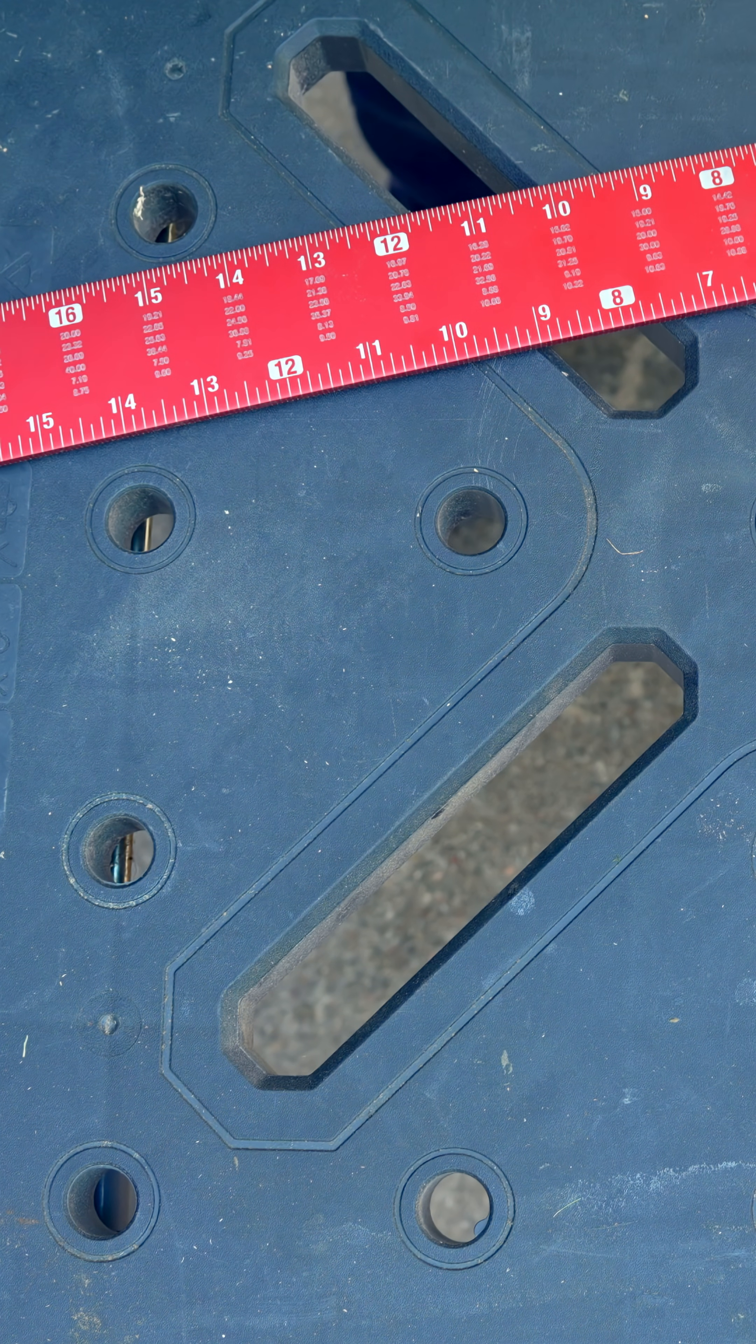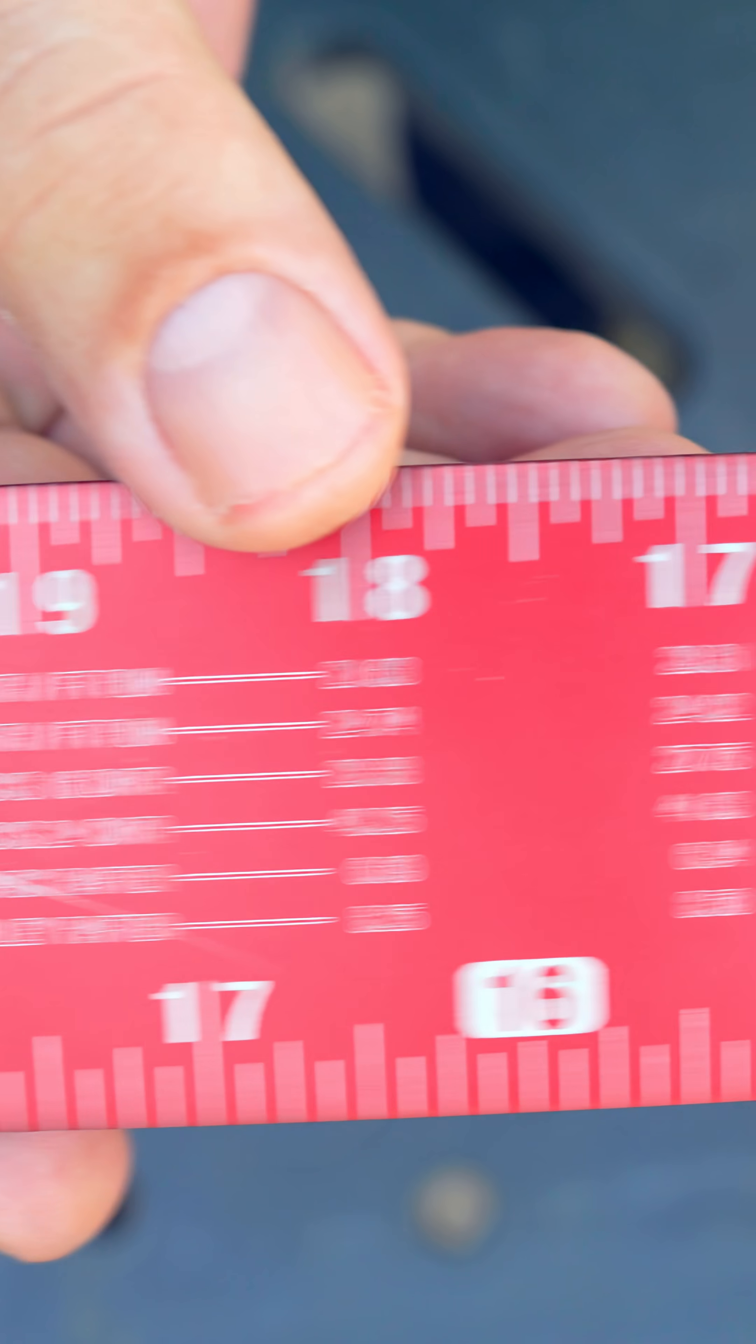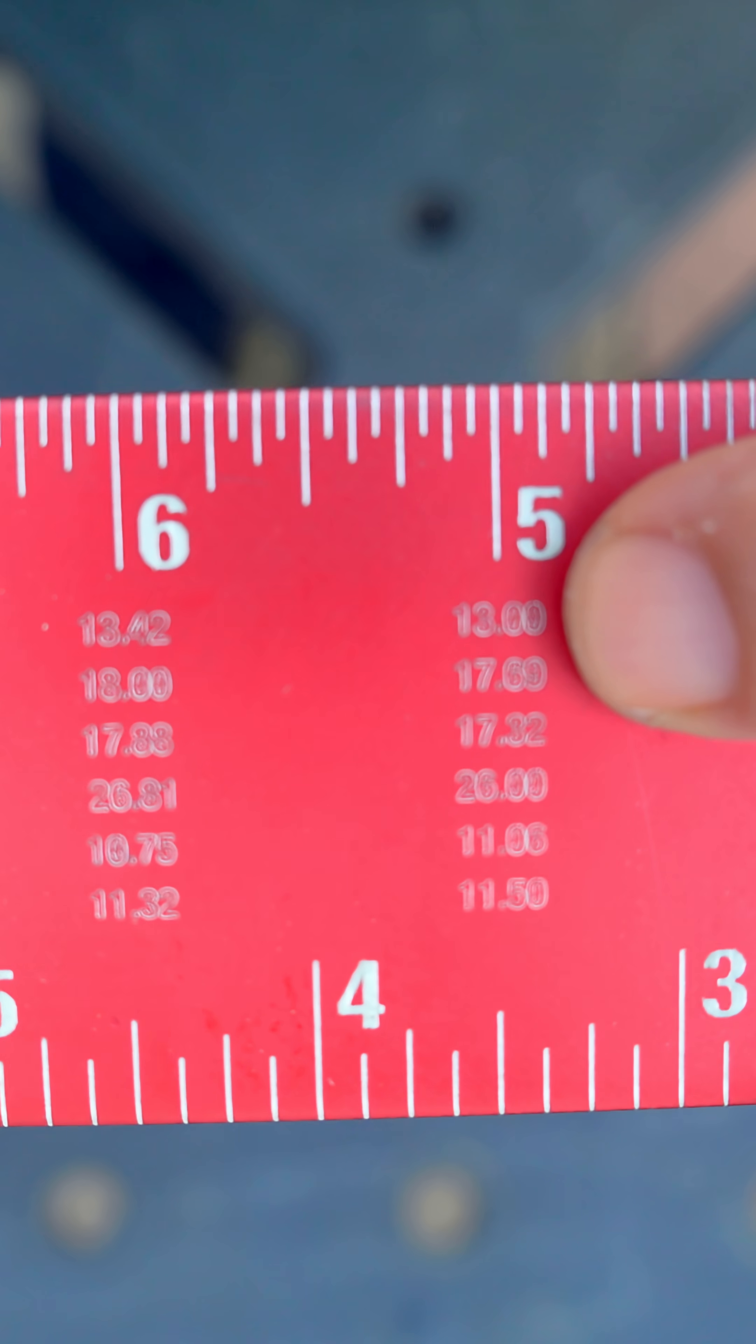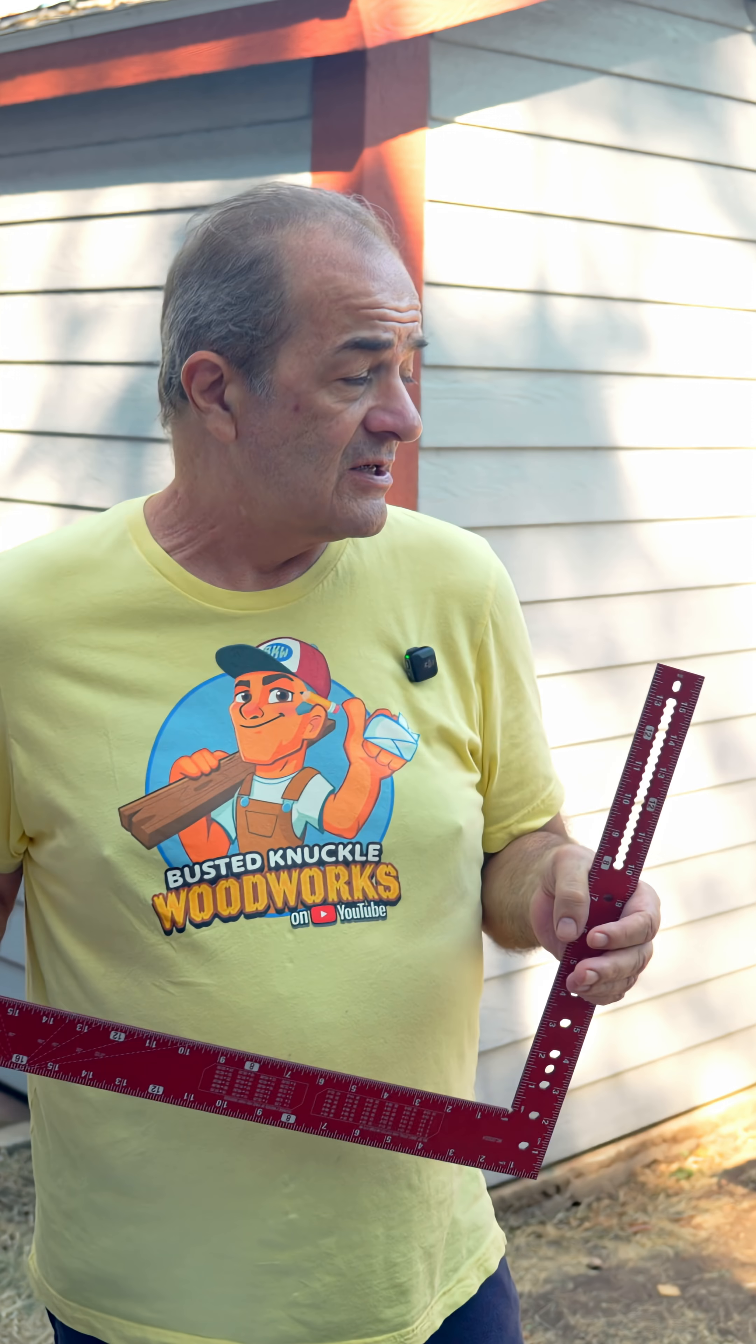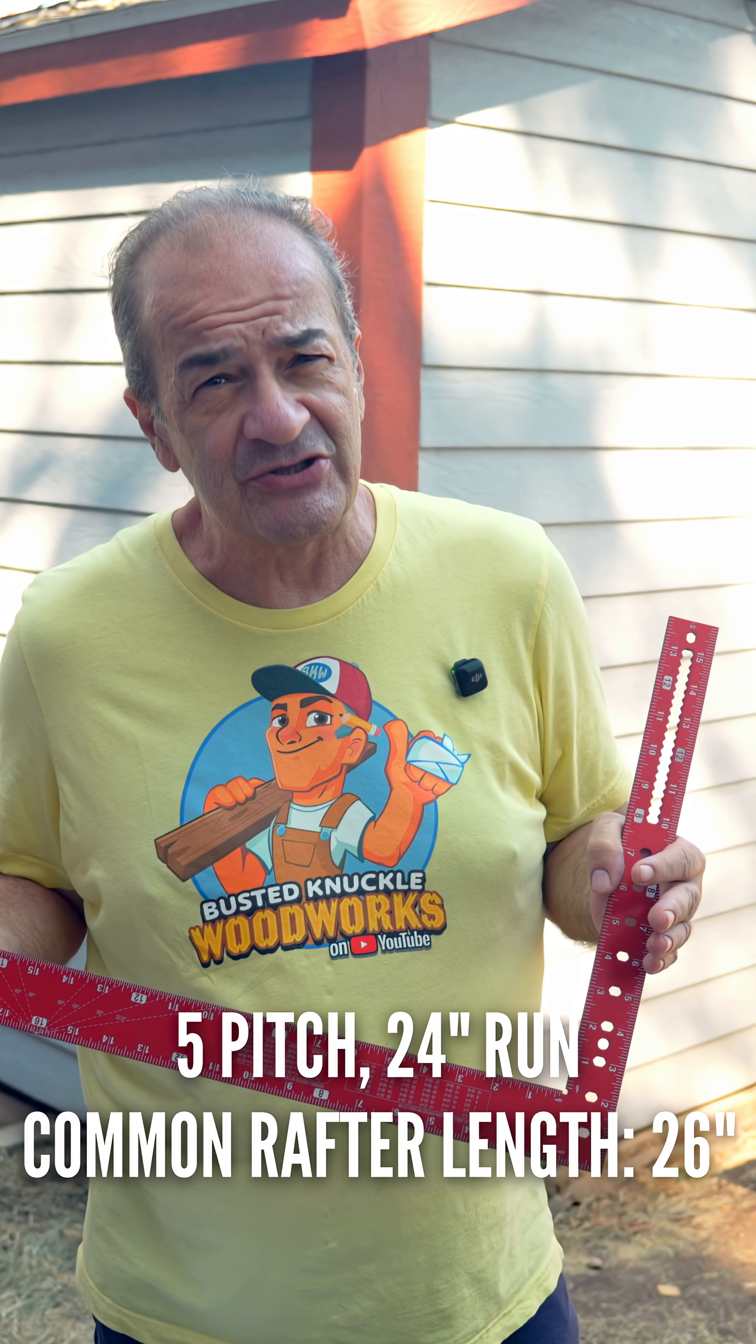This is a bit hard to read, but you'll see here this says common rafter length per foot of run. And remember, the pitch on our roof is 5. So if we follow this line over to the 5 inch mark, we discover that length is 13 inches. And that's per foot. So for a 24 inch run, you would double that figure, giving you a common rafter length of 26 inches.